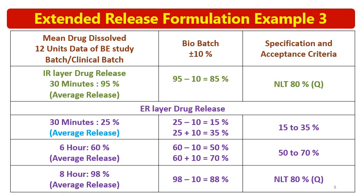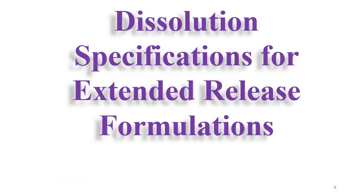For the second layer — the ER layer — you apply the logics for extended release dissolution specification. At 30 minutes, 25% release gives a specification of 15 to 35%. At 6 hours, 60% release gives 50 to 70%. At 8 hours, 98% release gives not less than 80%. For example, instead of 6 hours you could consider 5 hours with an average release of 50%, giving a limit of 40 to 60%. This covers the dissolution specification for extended release formulations.